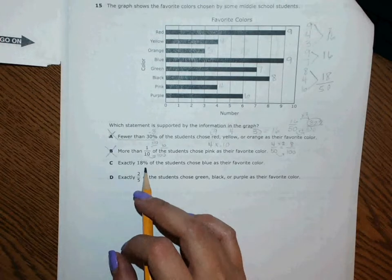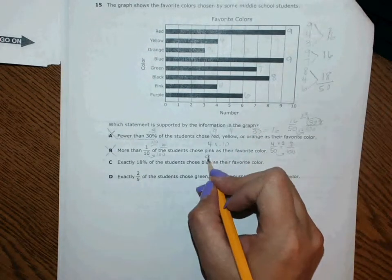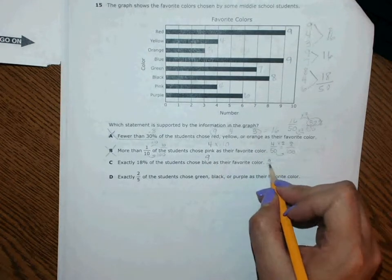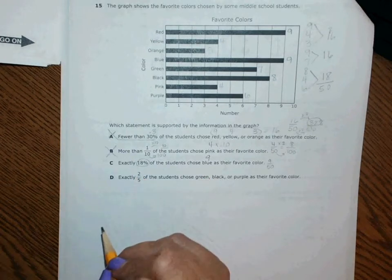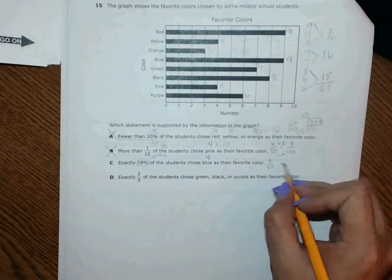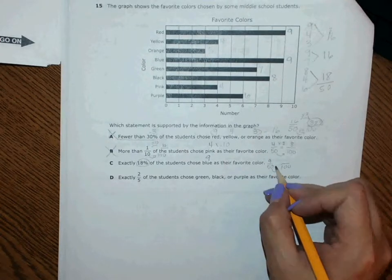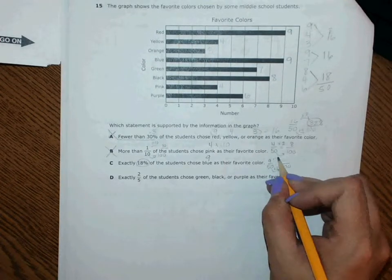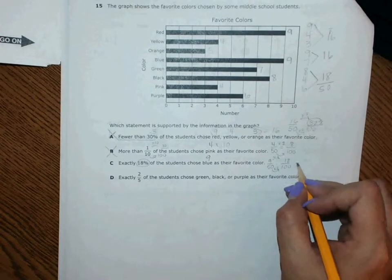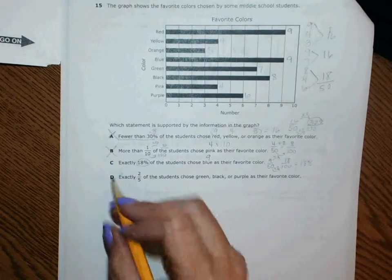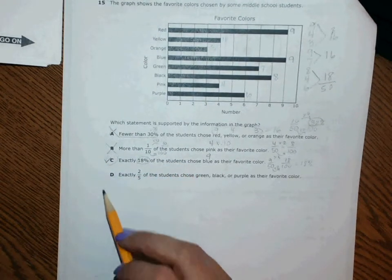And then letter C, exactly 18% of the students chose blue. So look at blue, blue says 9, that's 9 out of 50, and this is 18%. We'll keep doing this whole idea of times 2, that means times 2, and what do you know, that is 18 out of a hundred, which is 18%. This one says exactly, so this is my guess, but I am going to go ahead and solve this last one.